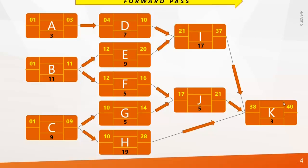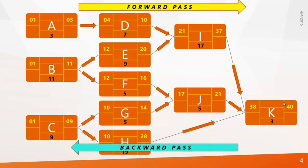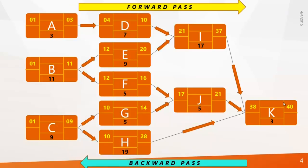Next we need to find the Late Start and Late Finish of all activities — this method is called the Backward Pass. Let's assume there is no delay and the client wants to finish by Day 40, so Late Finish becomes Day 40. We now calculate everything in reverse order.